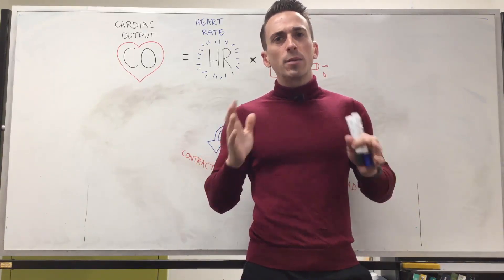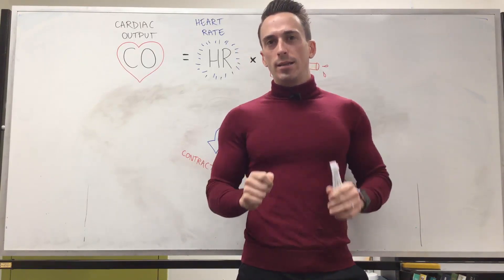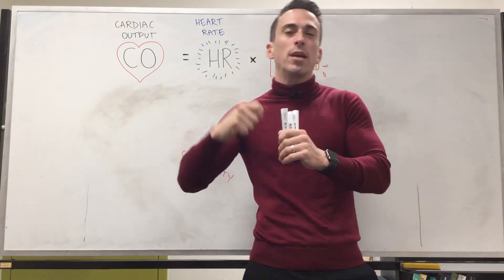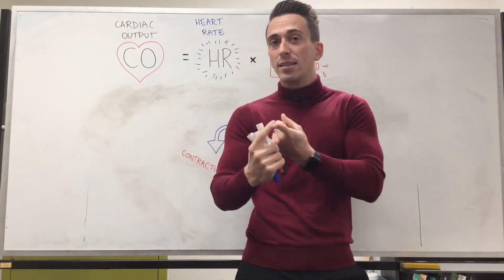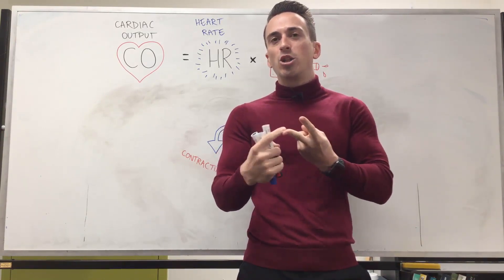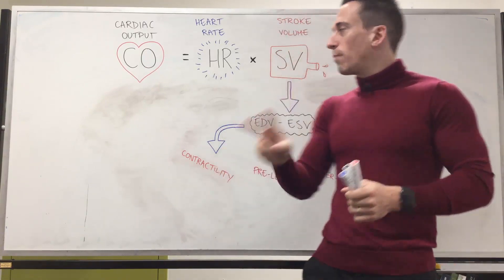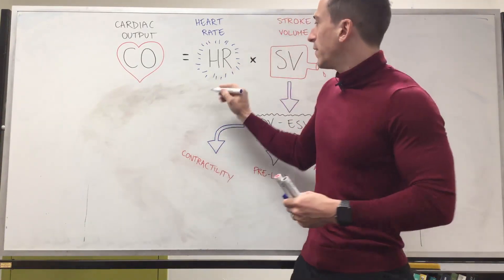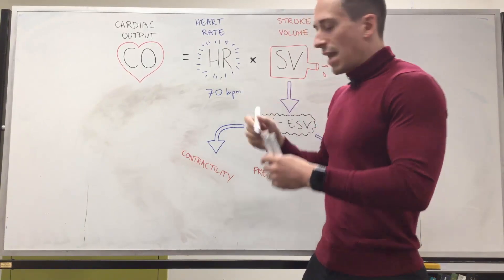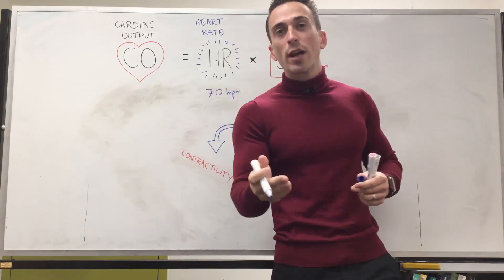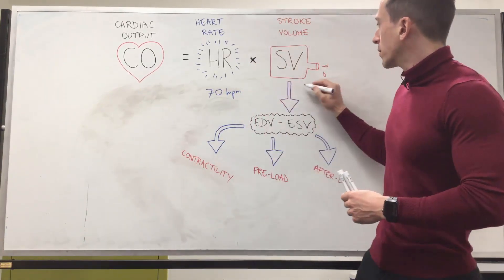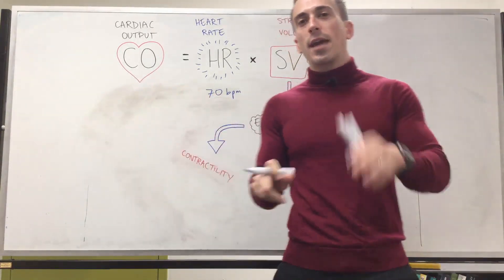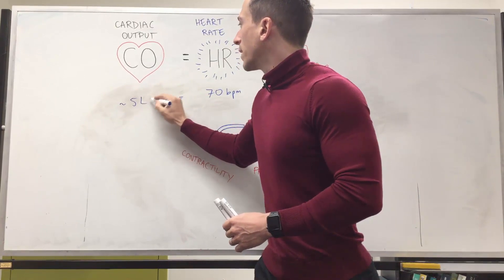What is cardiac output? Simply put, it is the amount of blood that our heart pumps out every minute. To calculate this, there are two major factors involved: how many times the heart beats per minute, and how much blood the heart ejects every beat — that's the stroke volume. Heart rate is on average around 70 beats per minute, and stroke volume is around 70 mils. So 70 beats per minute times 70 mils gives a cardiac output of around 5 litres per minute.